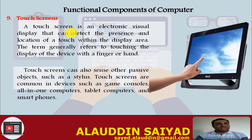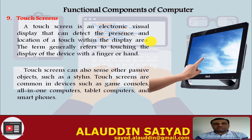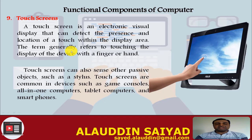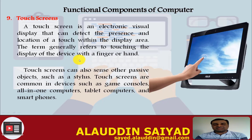Touch Screens. A touch screen is an electronic visual display that can detect the presence and location of a touch within the display area. When we touch a particular location, the touch device identifies our touch presence and performs the necessary action. The term generally refers to touching the display with a finger or hand. Touch screens can also sense other passive objects such as a stylus. Touch screens are common in devices such as game consoles, all-in-one computers, tablet computers, and smartphones.